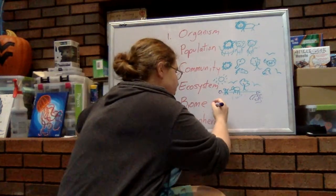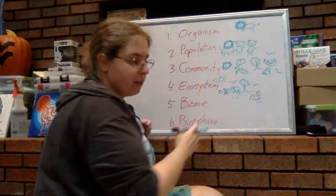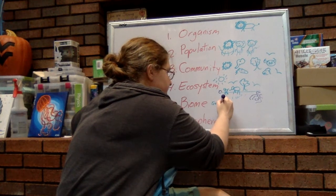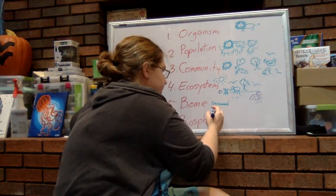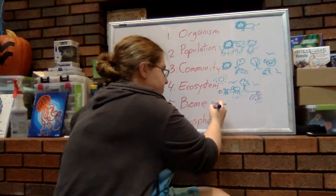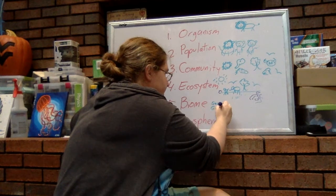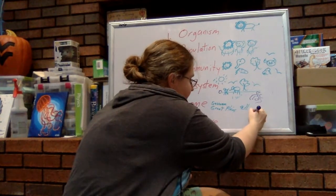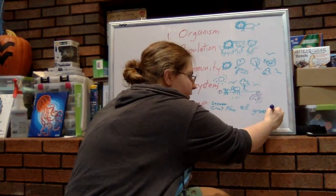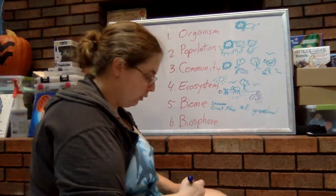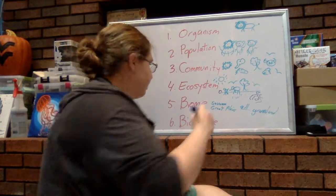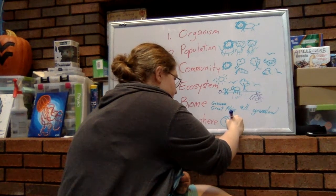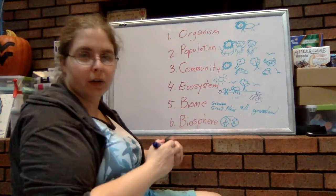Now all similar ecosystems. So in this case, it's a grassland, the savanna. Now all grasslands across the entire planet, such as the savanna, the Great Plains, et cetera, all grasslands across the entire world would be a biome. A biome is a collection of similar ecosystems. And then the biosphere, the biosphere is a part of the planet where life exists.